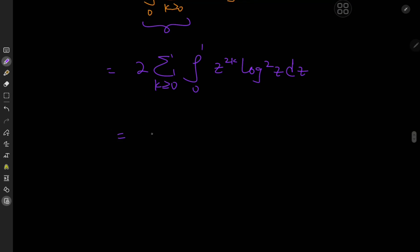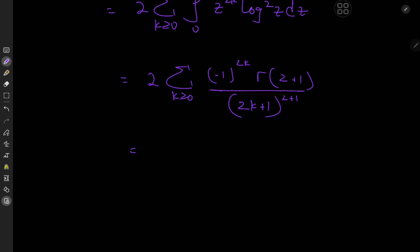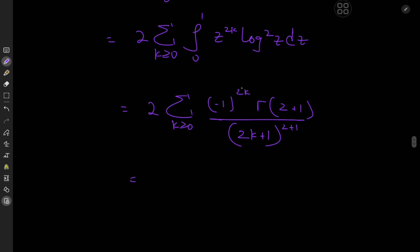Applying the generalized result, we get twice the sum over k of (-1)^(2k) · Γ(3) divided by (2k+1)^3. Since (-1)^(2k) = 1 and Γ(3) = 2! = 2, this simplifies to 4 times the sum over non-negative integers k of 1/(2k+1)³.